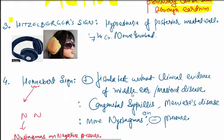Third point: Hitzelberger's sign. Burger on the ear, just like earphones. This indicates seventh cranial nerve is involved, with hypostasia of posterior meatal wall. Think of burger on ear like headphones.